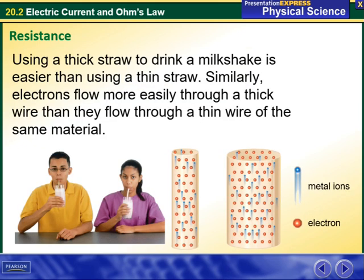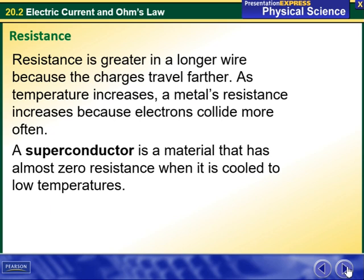Using a thick straw to drink a milkshake is easier than using a thin straw. Similarly, electrons flow more easily through a thick wire than through a thin wire of the same material. Here are metal ions, the blue ones, and here we have electrons. Resistance is greater in a longer wire because the charges travel farther. As temperature increases, a metal's resistance increases because electrons collide more often.